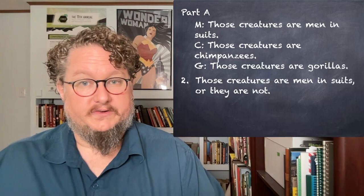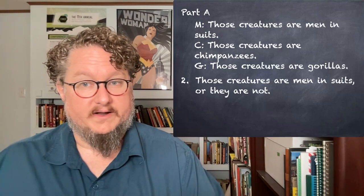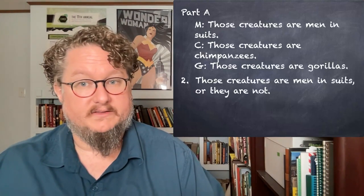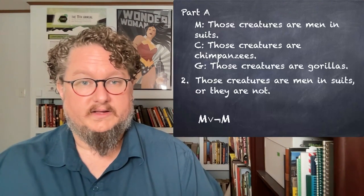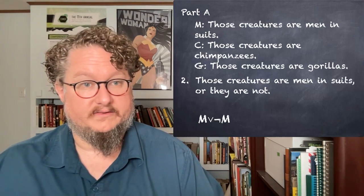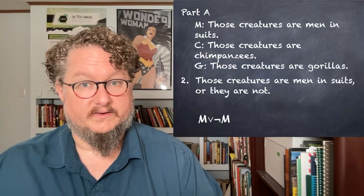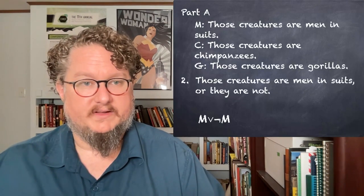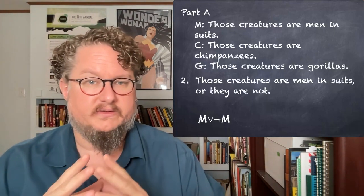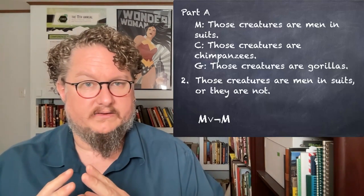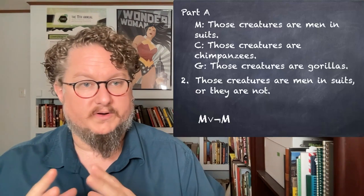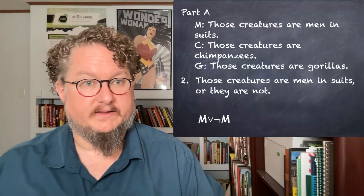Question two: 'Those creatures are men in suits or they are not' — that is, 'those creatures are men in suits or those creatures are not men in suits.' Here we've got a simple M-or-not-M statement. The disjunction and the negation are sufficient for those. You have to think, as you do the translation process, how the 'they are not' relates to our atomic sentences — we've got some pronouns here we need to connect up.